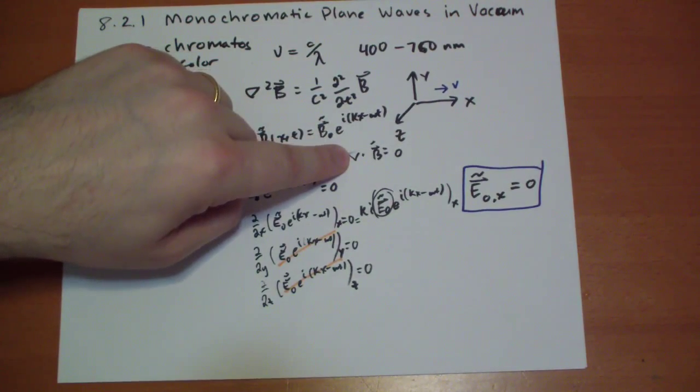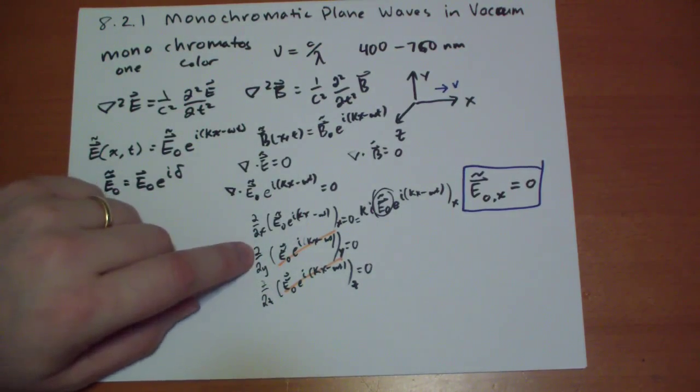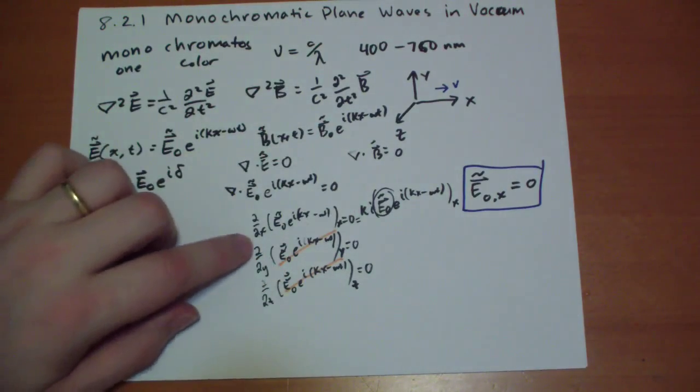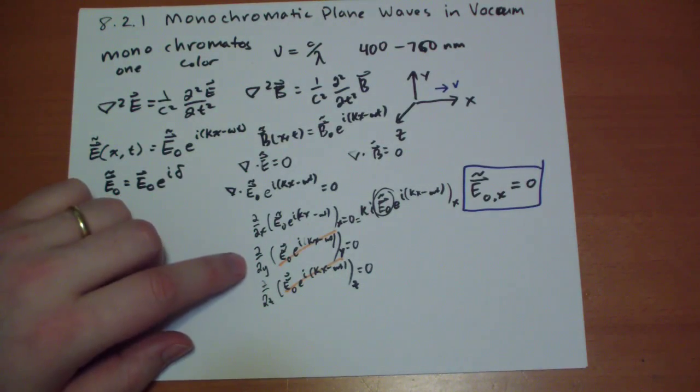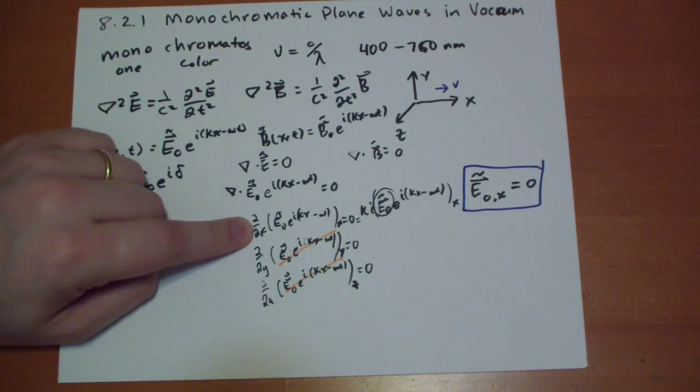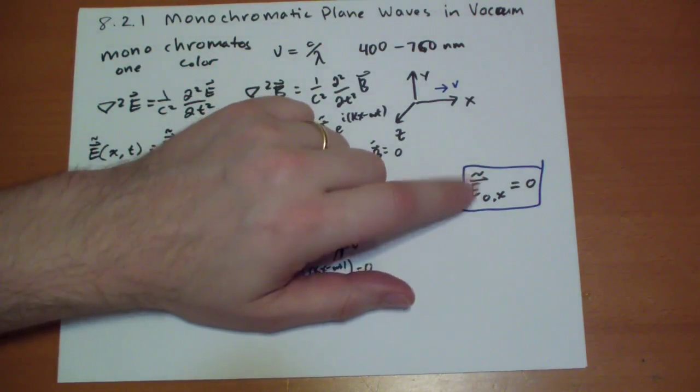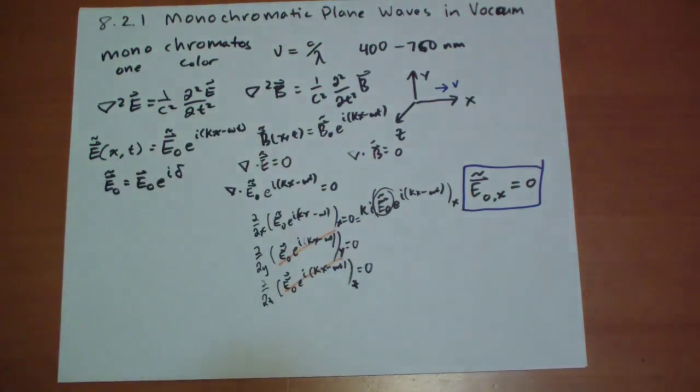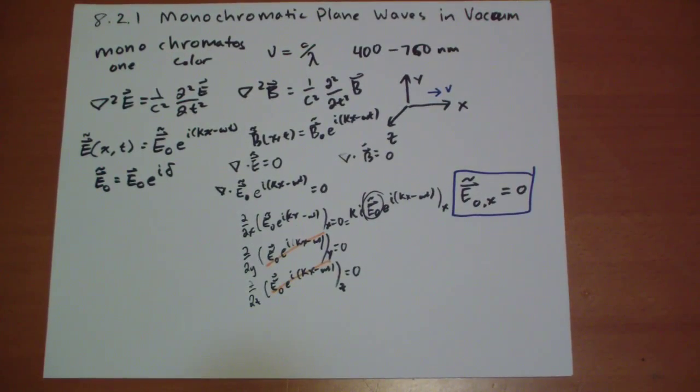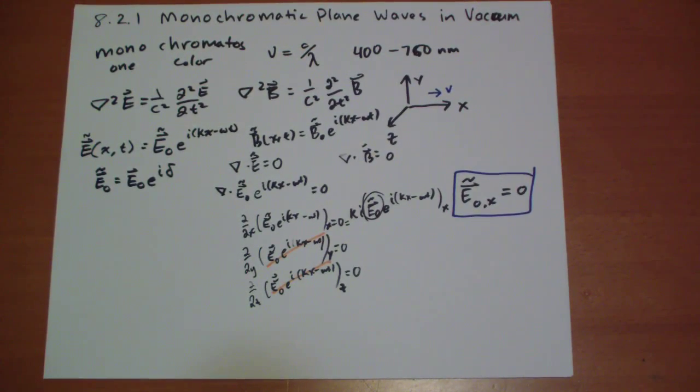And the same reasoning goes for the B field. Because the divergence of the B field has to be equal to zero. Same logic. Just automatically, the derivative of this is going to be zero. So, you don't have to constrain anything to get the Y, Z derivative to be zero. But you do have to do something to get the X derivative to be zero. Namely, you have to say that there is no X component to that field. At this point, I'm going to take a break and come back. I think it's been about 10 minutes. It has. It's been 12 minutes. And I'll come back and continue the discussion in part two. Thank you for your time.